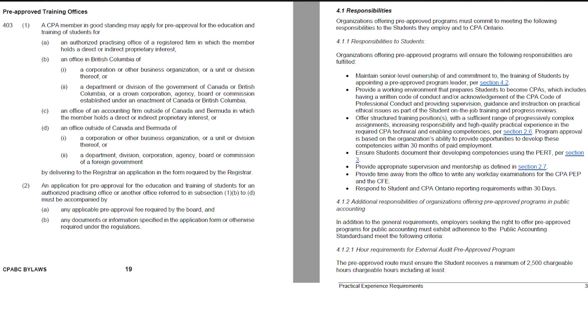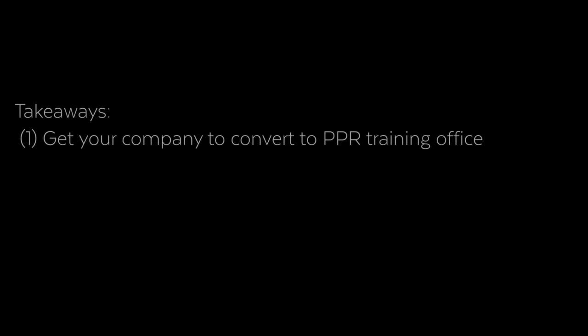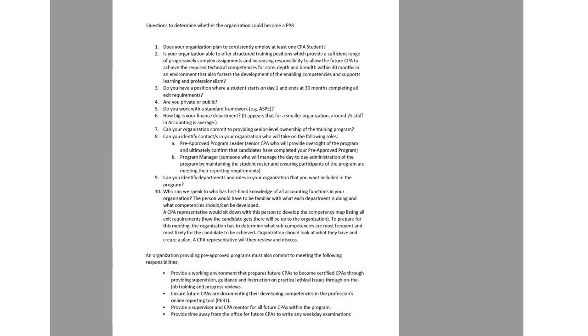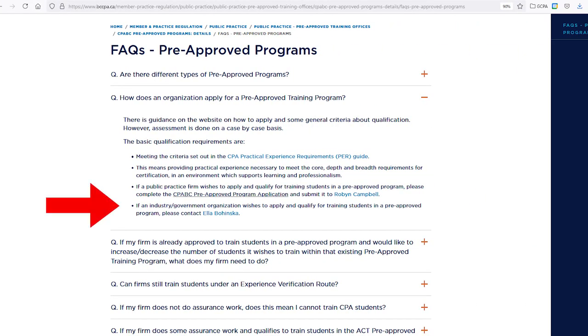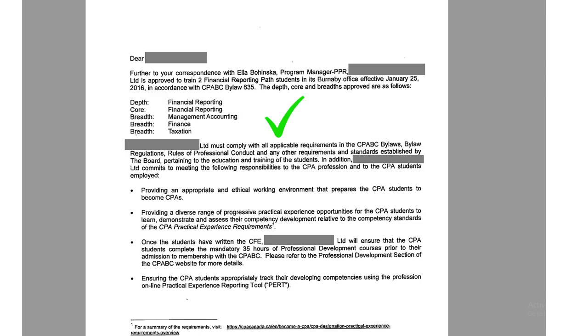If you look at the bylaws and regulations of your CPA provincial body — for example CPA BC or CPA Ontario — you'll see that any office can qualify to become one. There's a lot of Reddit discussion about PEP and CFE, but nobody really talks about PERT and which company to work for to get into the PPR route. Try to get your current company to convert to a PPR training office. The employer completes an application, you send it to your regional office, and you'll get a confirmation letter. Your PERT will then be converted from EVR to PPR and you won't have to complete the technical requirements anymore.